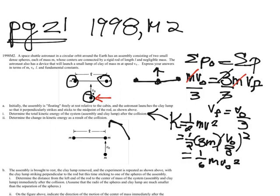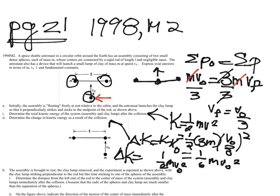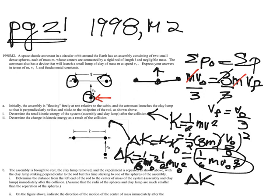In the second part of part a, it says determine the change in kinetic energy. So ΔK = K − K₀. Initially we had just the little ball moving, so we had (1/2)MV₀². At the end we had (1/6)MV₀². So 1/6 minus 1/2 is negative 1/3, and our change in kinetic energy is −(1/3)MV₀².